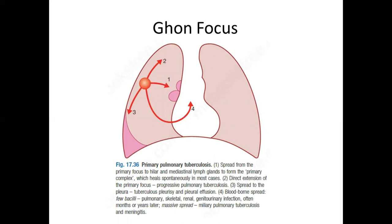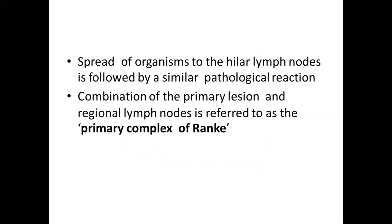The primary focus can spread to the hilar or mediastinal lymph nodes to form the primary complex, which can heal spontaneously in most cases, or it can undergo direct extension leading to progressive primary pulmonary tuberculosis. It can also spread to the pleura causing pleural effusion, or have hematogenous spread leading to skeletal, renal, or genitourinary infection, which may present months or years after the initial infection. In immunocompromised patients, there can be massive spread leading to miliary pulmonary tuberculosis and even meningitis. The combination of the primary lesion and the regional lymph nodes is referred to as the primary complex of Ranke.